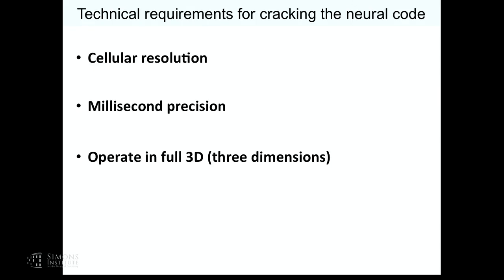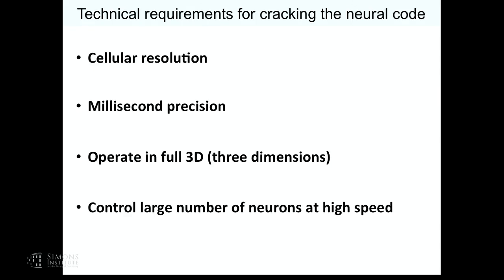We needed spatial targeting in the cortex because you have thousands of pyramidal cells that are not easily differentiable genetically, and we wanted to write patterns of activity in the brain at cellular resolution with millisecond precision. If we're going to create patterns that mimic physiological patterns and causally relate them to perception, we need to manipulate cells one at a time or as ensembles but with cellular resolution. A major question is how much information is encoded in the timing of spikes.